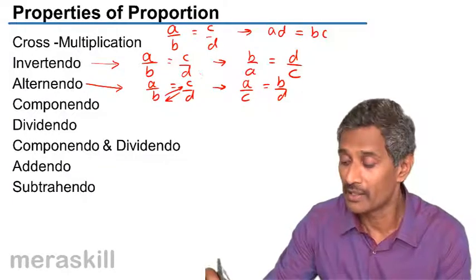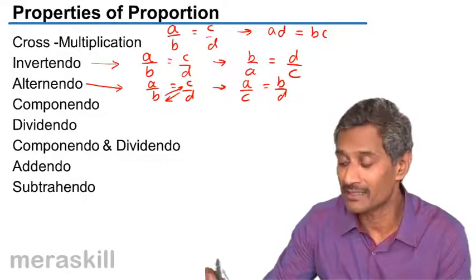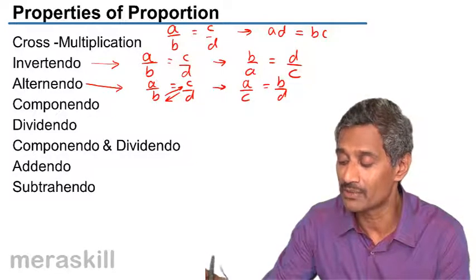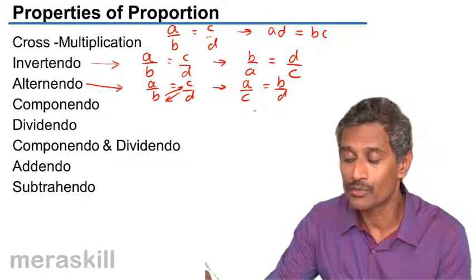You are just transposing the consequent and antecedent of the terms. You can even do it the same way for A. So even D by B is equal to C by A, and that is called alternando.